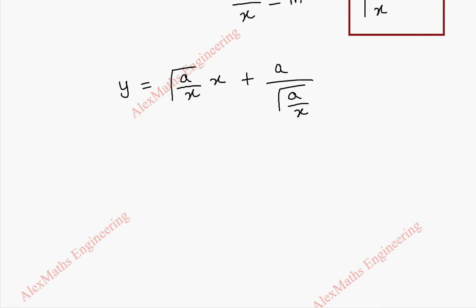When we simplify this, the term is y = √a/√x times x, plus this is a, and we can write this as a reciprocal product, so √x/√a. We can cancel this and this. It will become √x. We can cancel this and this. This will become √a.